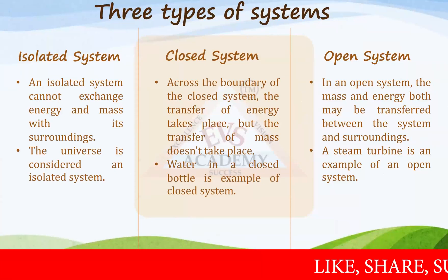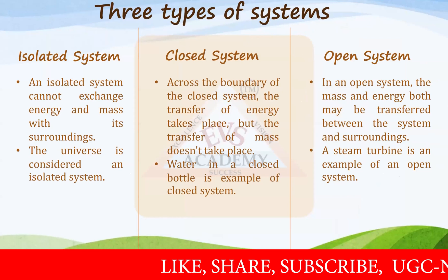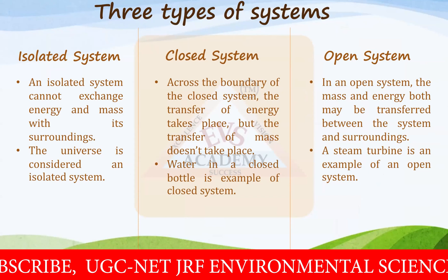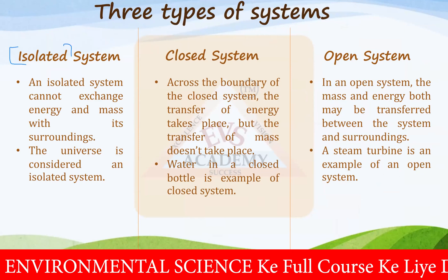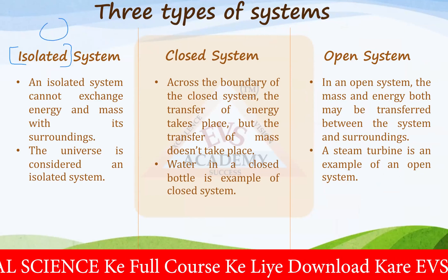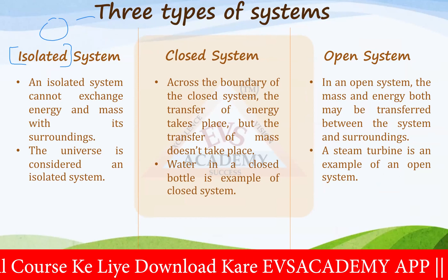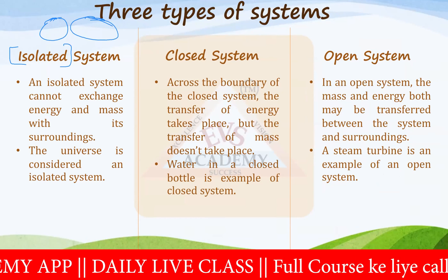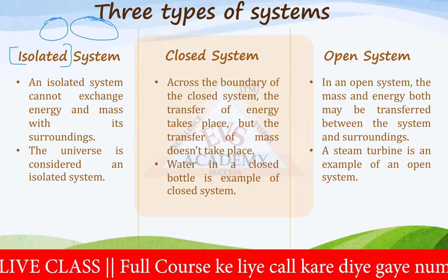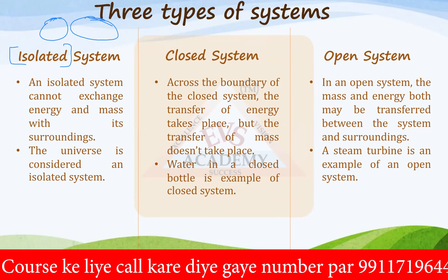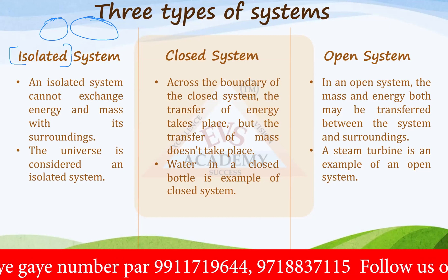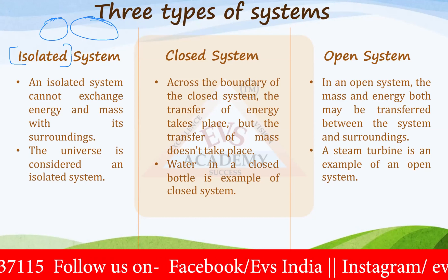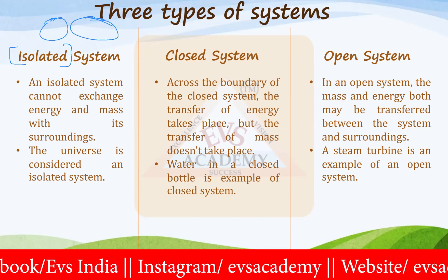According to thermodynamics, there are three types of systems. The very first is called an isolated system. This is your system and all other things are your surrounding, and it is completely isolated from the surrounding. It means it is not exchanging anything with the surrounding — it cannot exchange any amount of energy or any amount of mass with its surrounding.